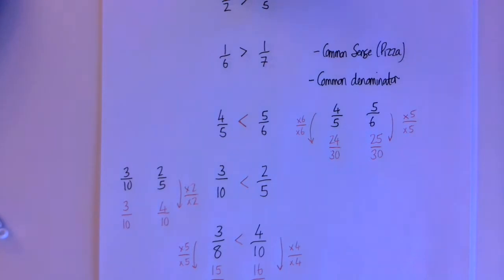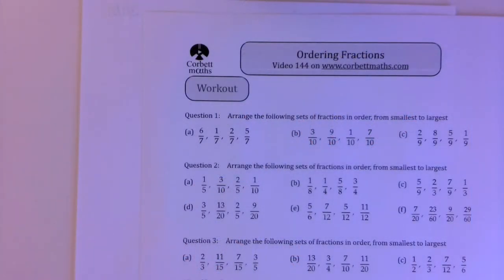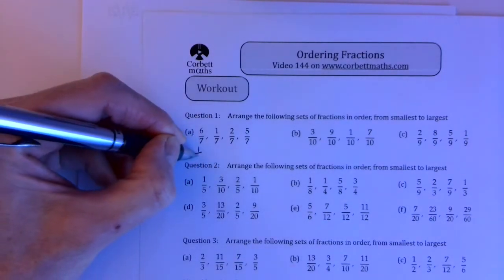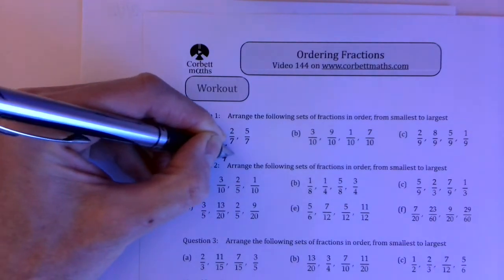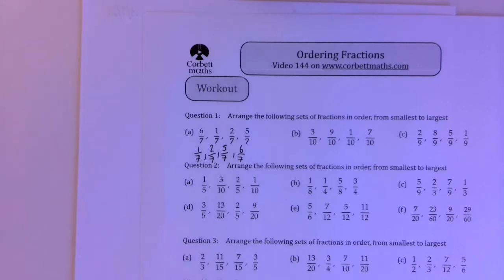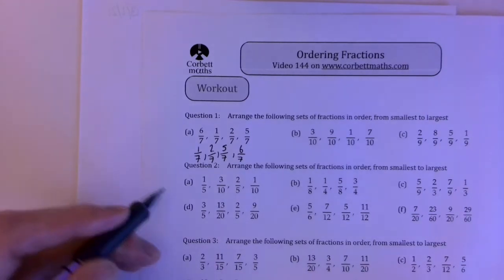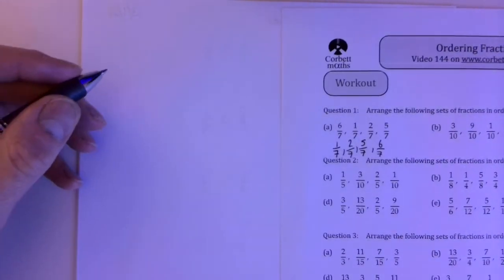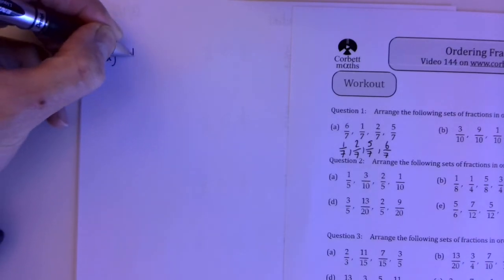We've looked at comparing two fractions — let's ramp up the difficulty. I'm using a resource from another website. We're not just comparing a pair of fractions but taking a list and putting them in order from smallest to largest. The easy version — same denominators like sevenths — is straightforward: one seventh, two sevenths, five sevenths, six sevenths. Let's try the harder examples: we're going to do one from question two, a couple from question three, and question four which is a little bit fiddlier.